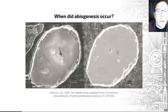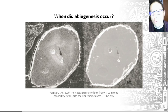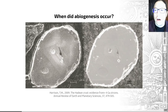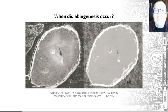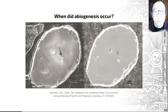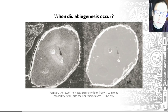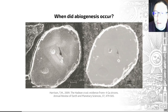Moon cratering suggests that the period from 4.4 to 4 billion years ago was relatively impact-free — there weren't lots of asteroids, comets, and meteorites hitting the Earth. It is in that quiescent, relatively cool period with liquid oceans that the key steps in the origin of life might have occurred. That is a statement of my opinion rather than a broad consensus.